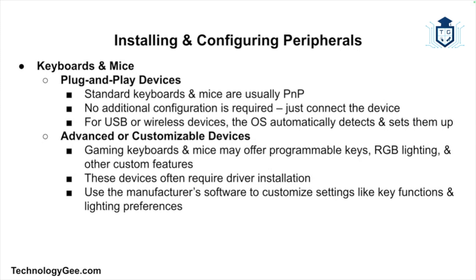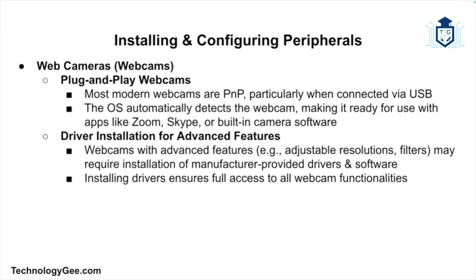The next peripheral devices are keyboards and mice. Standard keyboards and mice are often plug-and-play, requiring no additional configuration. For USB or wireless options, simply connect the device and the operating system will detect it automatically. Some gaming keyboards or mice that offer programmable keys, RGB lighting, or other features require a driver installation — install the software provided by the manufacturer to customize the settings.